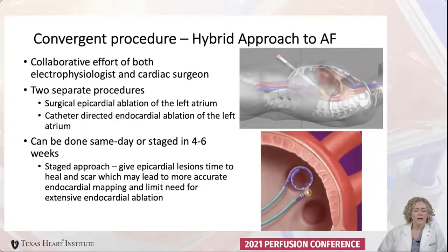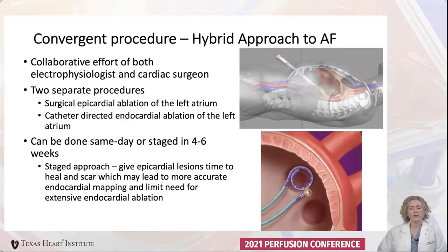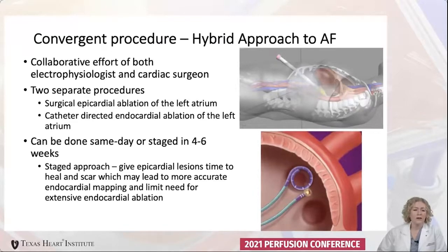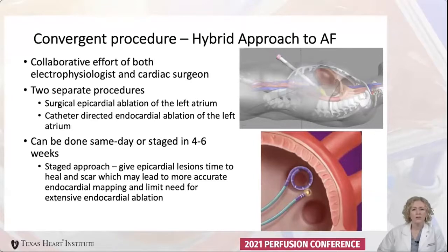The newest treatment for AFib is the convergent procedure, or a hybrid approach to AFib. It's a collaborative effort with both electrophysiologists and cardiac surgeons — basically two separate procedures: surgical epicardial ablation of the left atrium by a surgeon, and catheter-directed endocardial ablation. This can be done on the same day or staged four to six weeks apart. We prefer delaying it at least four weeks to give the epicardial lesions time to heal and scar, leading to more accurate endocardial mapping for the second stage.